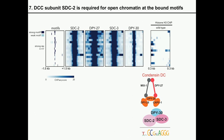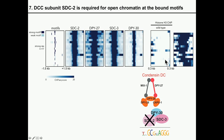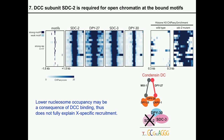To address causality, we used a mutant of the dosage compensation complex subunit SDC-2, in which the rest of the dosage compensation complex does not bind to the X-chromosome. Looking at ChIP-seq data across a 600 base pair window around the motifs at the top recruitment sites, when you mutate SDC-2, the nucleosome occupancy of the bound motifs actually increases. This data suggests that the lower nucleosome occupancy at the motif is a consequence of DCC binding and may not explain X-specific recruitment of the complex.